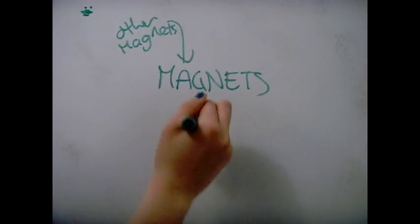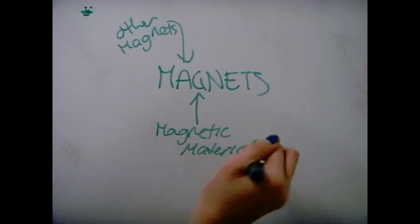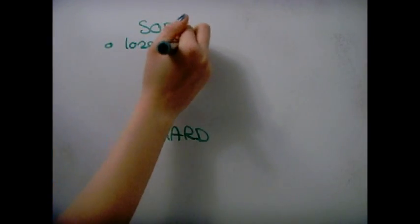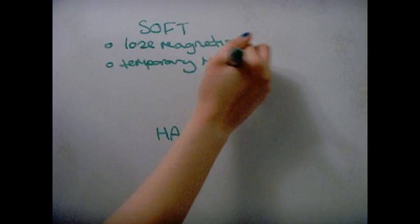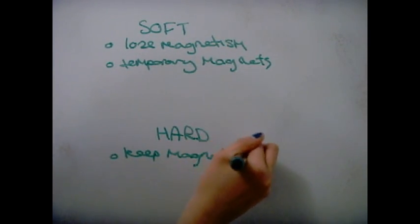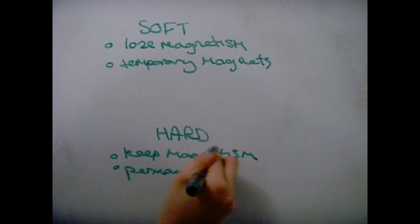Magnets attract other magnets and other magnetic materials. Magnetically soft materials lose their magnetism easily and are used as temporary magnets. Magnetically hard materials retain their magnetism once they are magnetized.